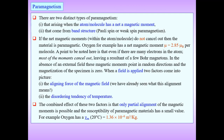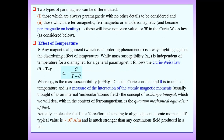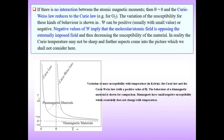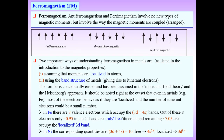In paramagnetic materials, most of the moments cancel out, leaving only a few net magnetic moments. Paramagnetism is related to Curie's law. Now in this lecture we discuss ordered magnetisms: ferromagnetism, anti-ferromagnetism, and ferrimagnetism, which involve not new types of magnetic moments but the way magnetic moments are coupled.